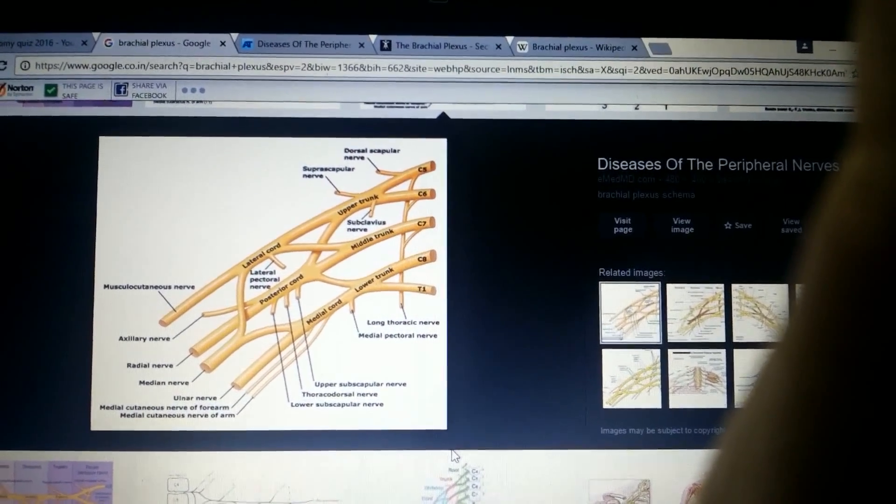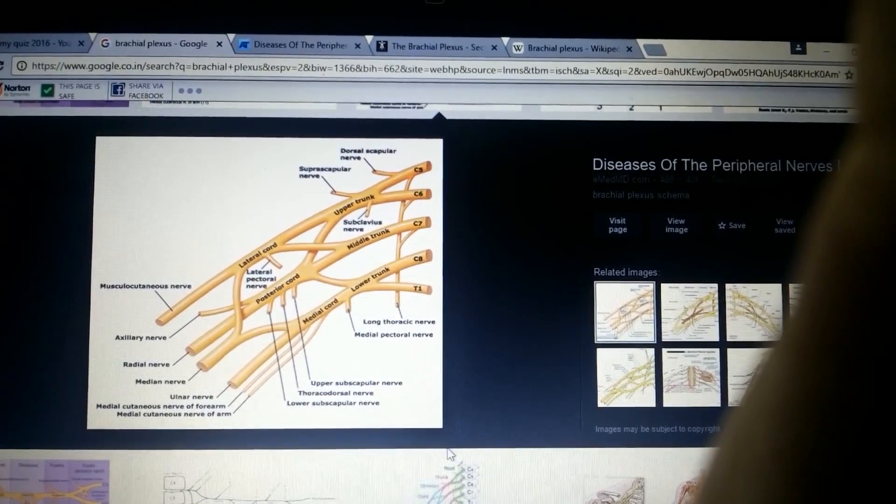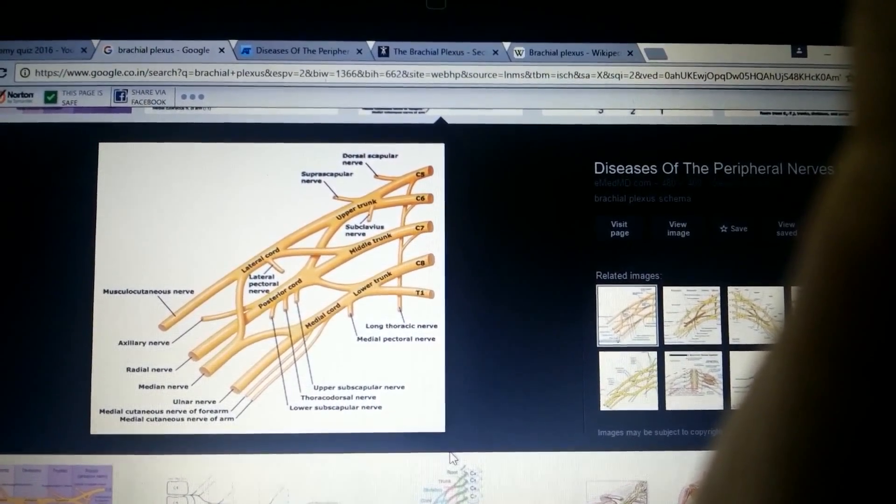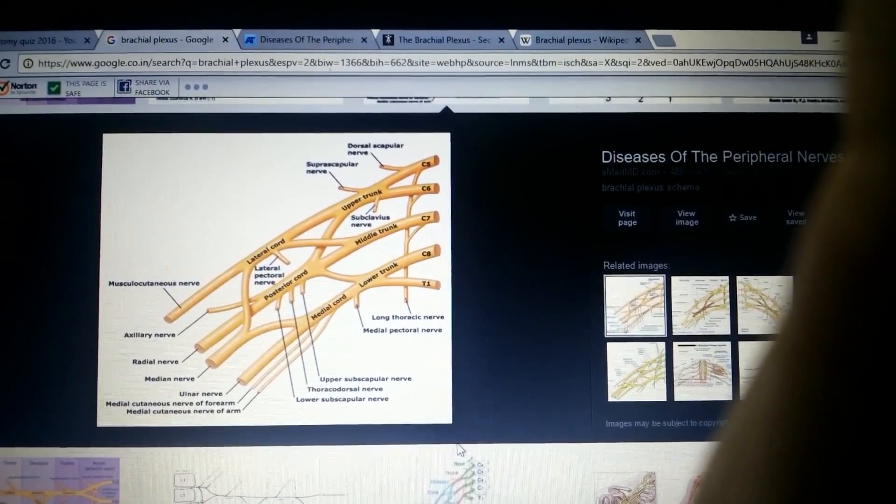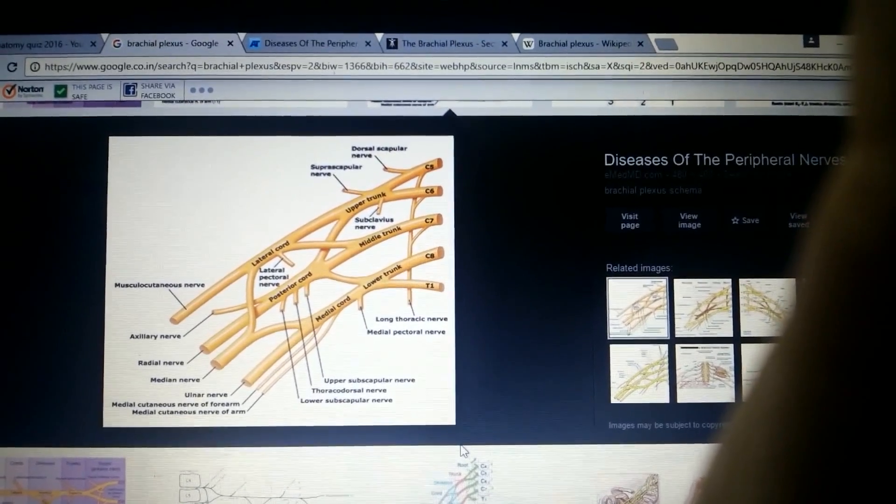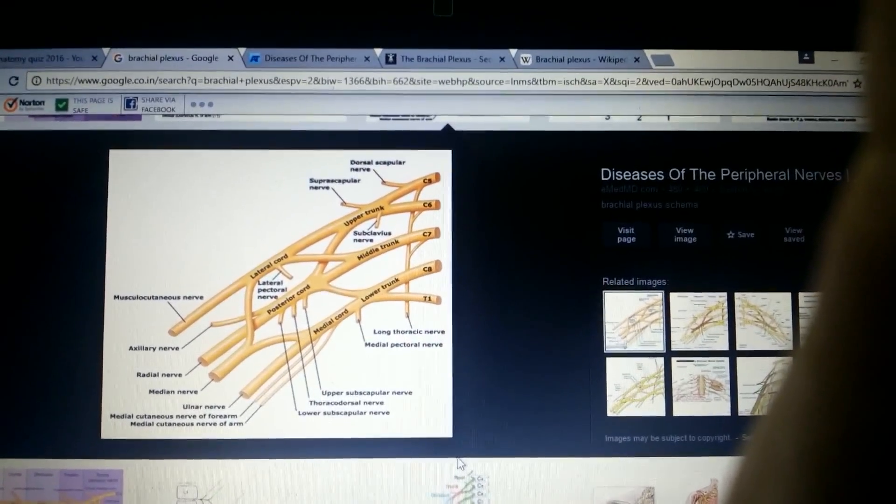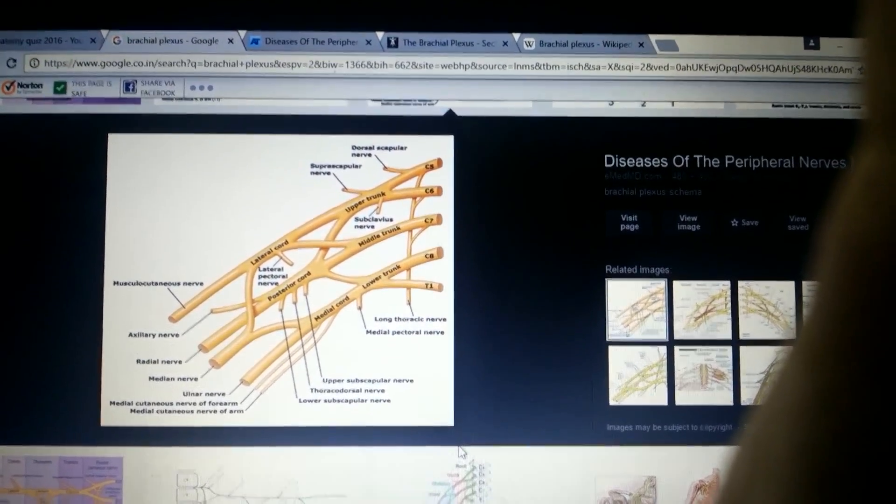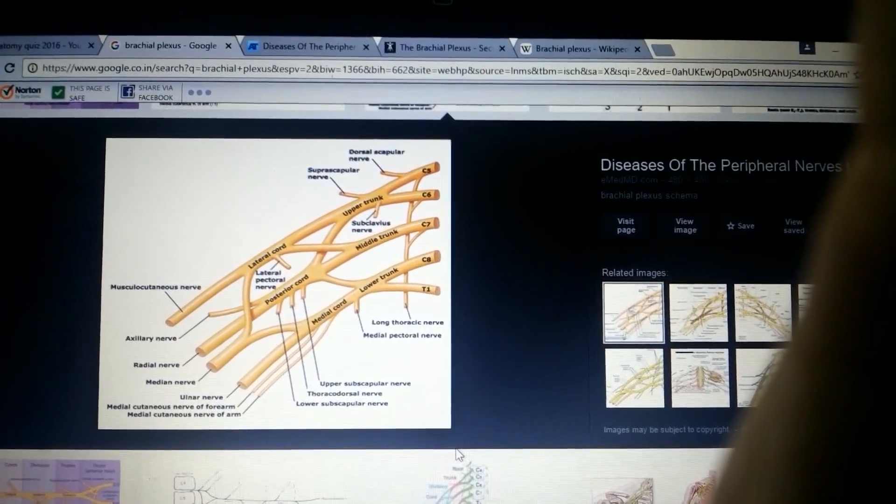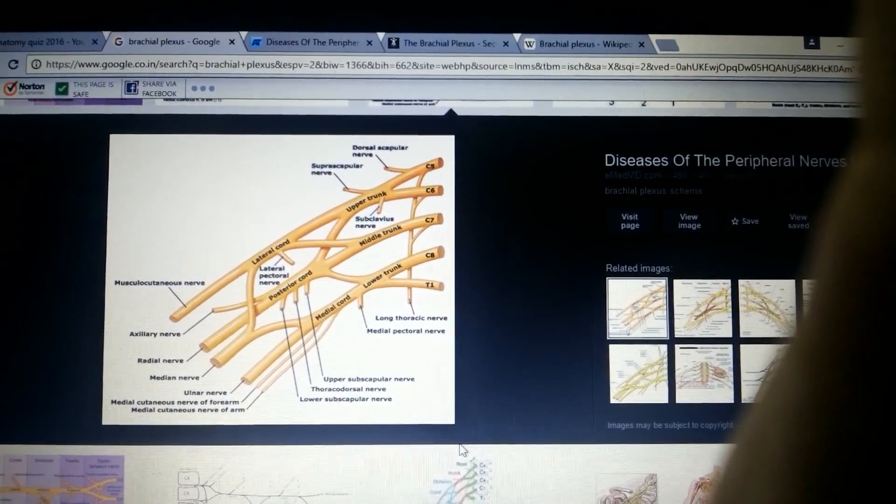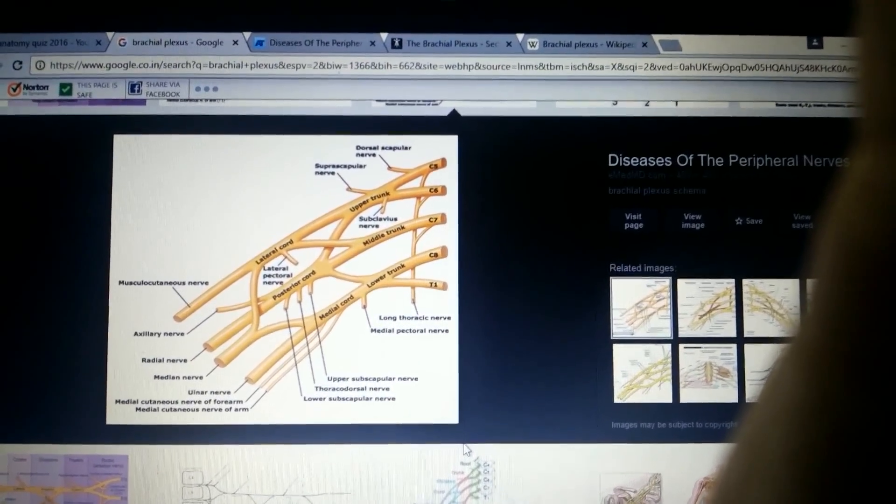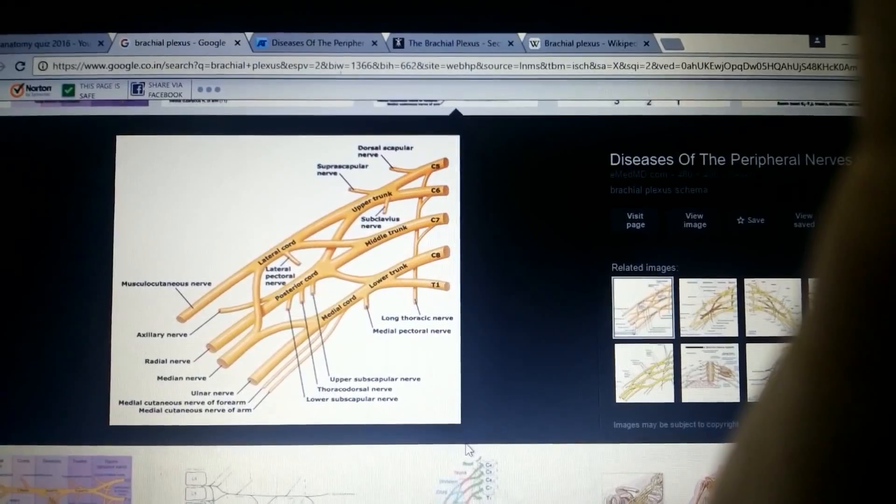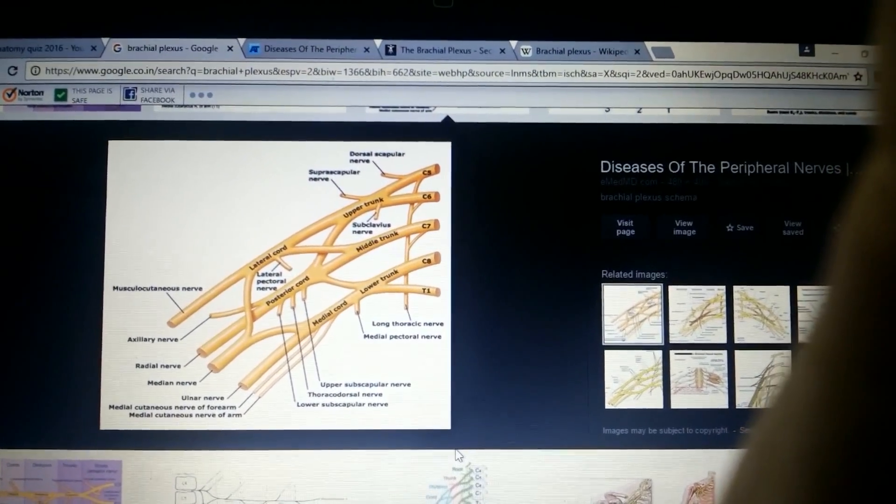From the medial cord we get ulnar nerve, medial cutaneous nerve of forearm, medial cutaneous nerve of arm, and medial pectoral nerve. The medial cord mostly contains nerves starting with M: medial cutaneous nerve of arm, medial cutaneous nerve of forearm, and medial pectoral nerve, along with ulnar nerve.